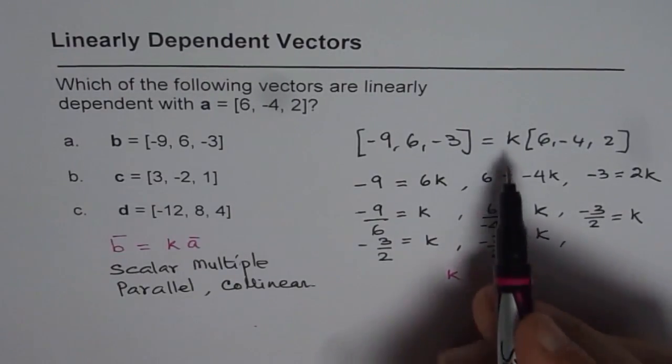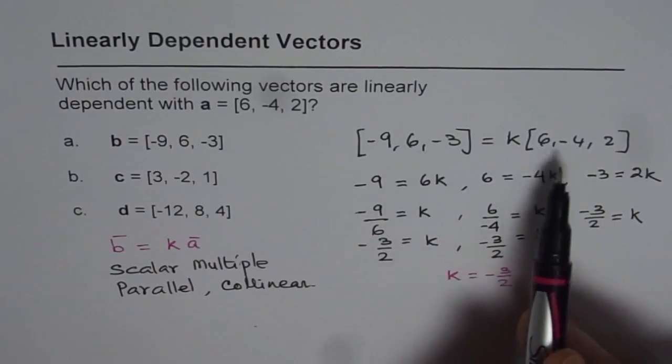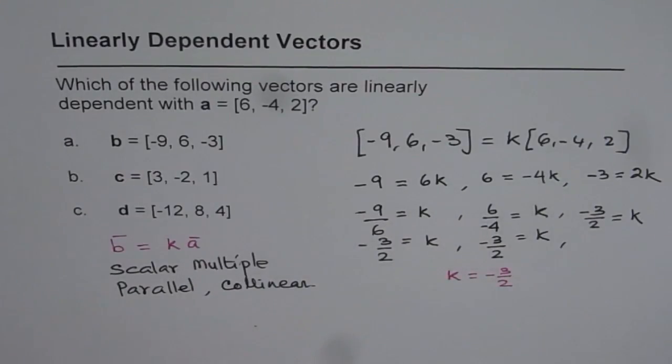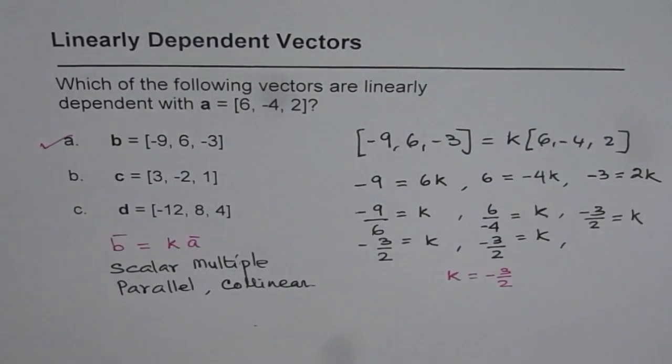So that means K is a scalar number which exists and which makes the two vectors collinear, right? Since they are scalar multiples, they are collinear or parallel vectors and therefore they are linearly dependent vectors. So we say, well, this one is linearly dependent, right?